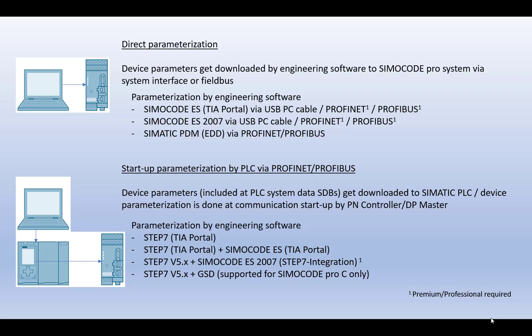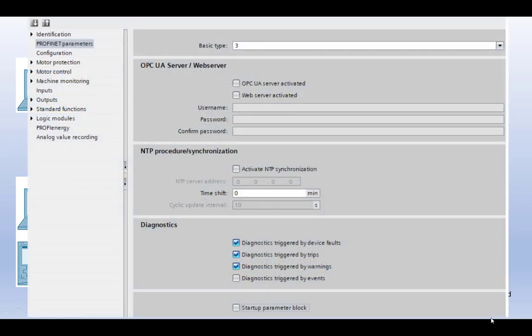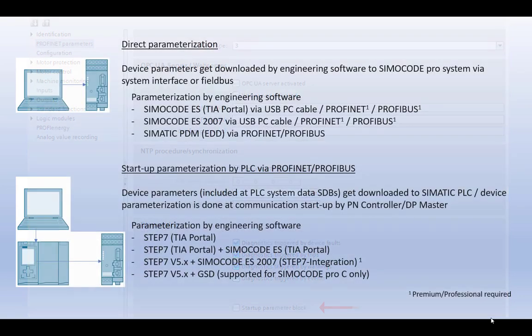If you get a new SimulCode Pro device or you restore factory settings, the Startup Parameter Block is always disabled. That means for a replacement you only need to set the Profibus address or Profinet device name to the new device, and the starter parameterization will give the correct parameters to this new device. Additionally, if you have a Profinet Topology in your Step 7 project, you also do not need to set the Profinet device name to the new device, which makes the replacement very easy.